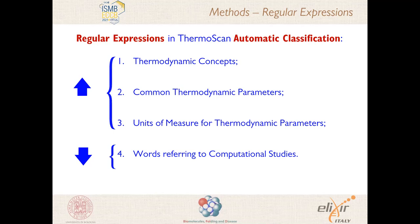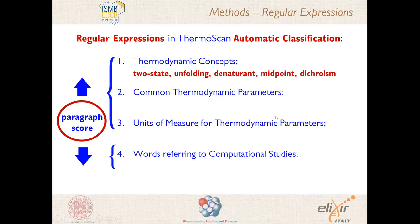The score is calculated for each paragraph of the scanned article. Examples of thermodynamic concepts are words like two-state, unfolding, and denaturation. Common thermodynamic parameters are, for instance, heat capacity, melting temperature, and delta G. Then we have the units of measure, and the words typically found in computational studies are simulation, molecular dynamics, force field, and so on.